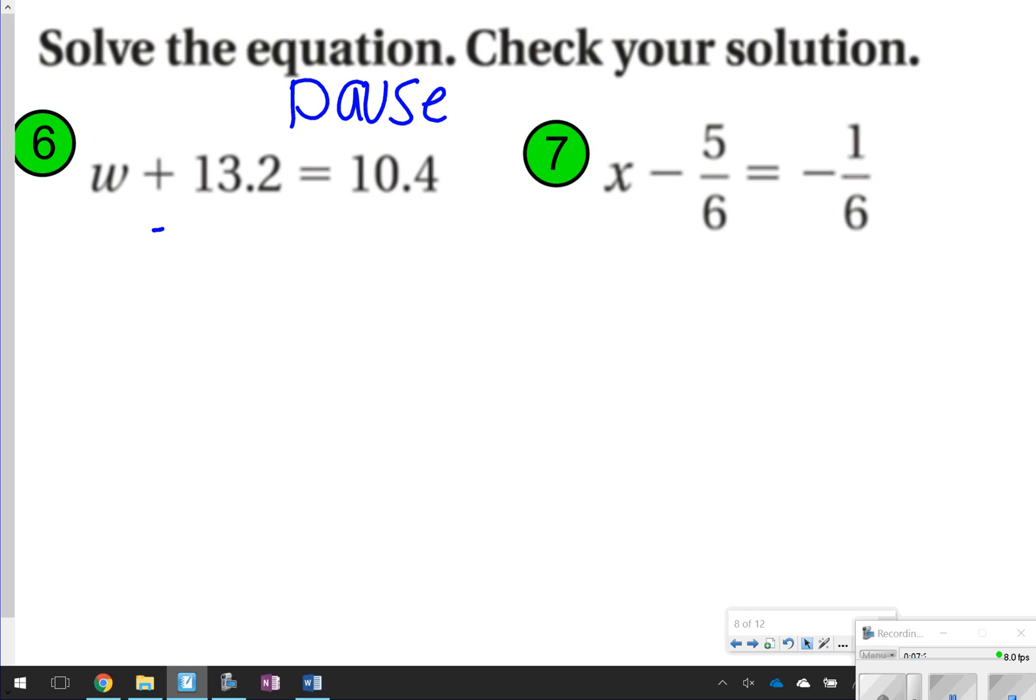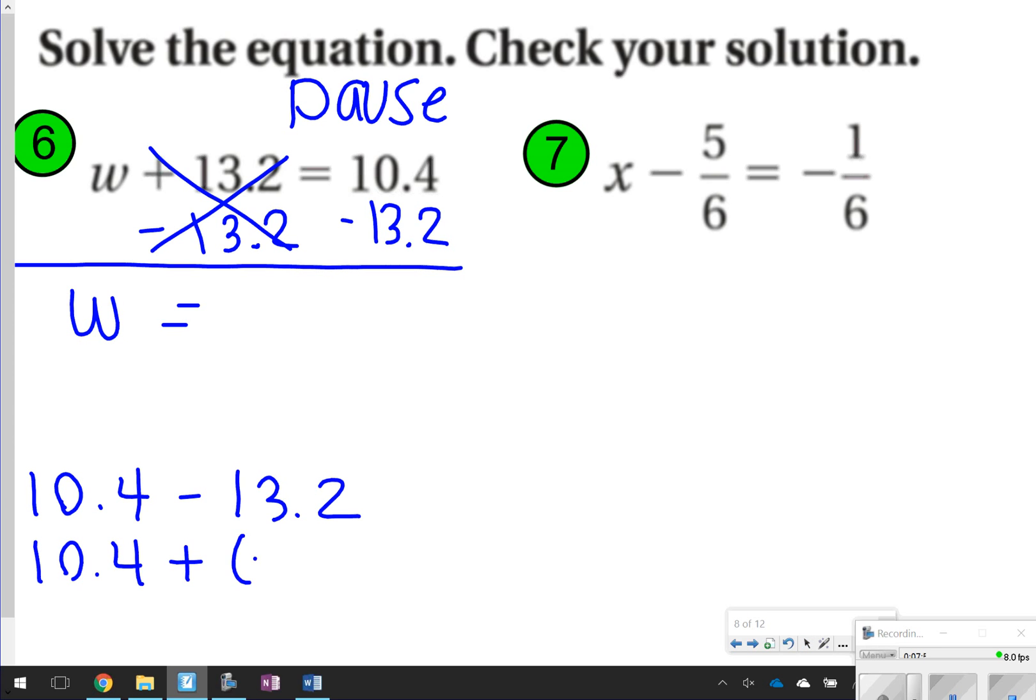All right, so number 6, we are subtracting. So I'm going to subtract 13.2 from both sides to get my answer. These 13.2s will cancel out. So now I'm left with w = 10.4 - 13.2. 10.4 - 13.2 is the same thing as 10.4 + (-13.2). Notice I have different signs. So I'm going to subtract. I'm going to put 13.2 on top, 10.4 on the bottom because 13.2 is larger. Can't do 2 - 4, so I'm going to borrow 12 - 4 though is 8. 2 - 0 is 2. I'm going to get 2.8, but the 2.8 will need to be negative because my larger value 13.2 is also negative.